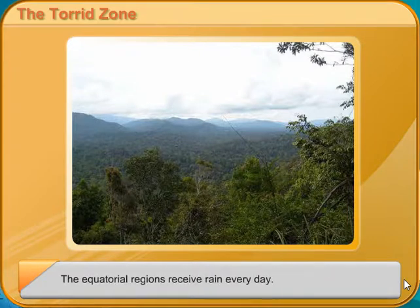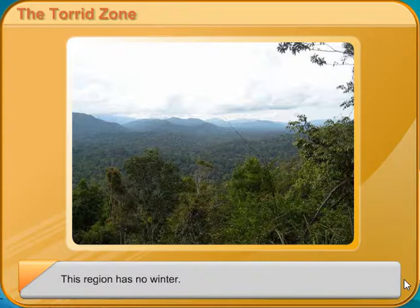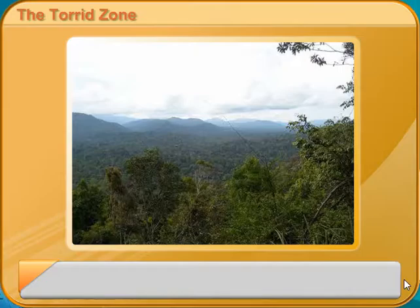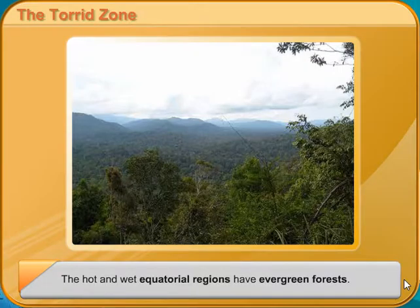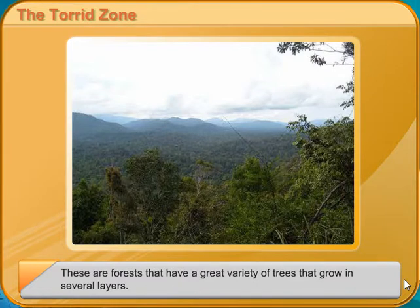The equatorial regions receive rain every day, and this region has no winter. Most of the world's deserts are in this region. The hot and wet equatorial regions have evergreen forests — forests that have a great variety of trees that grow in several layers.